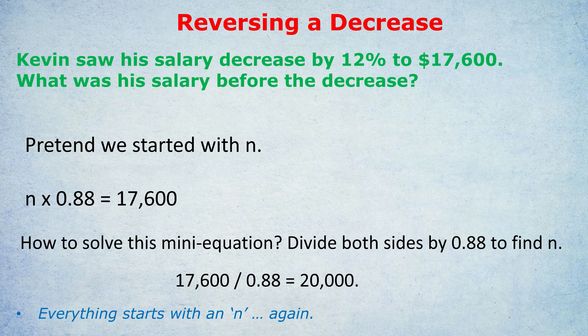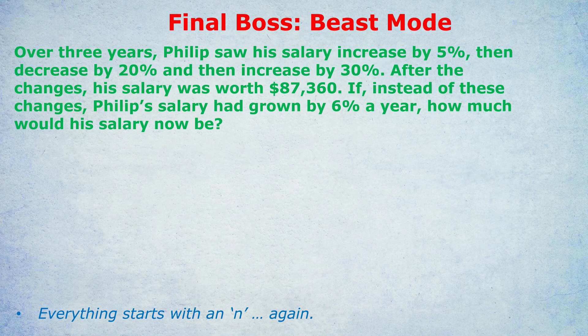Now have your best go at the final, very difficult question. Over three years, Philip saw his salary increase by 5%, then decrease by 20%, and then increase by 30%. After the changes, his salary was $87,360. If instead of these changes his salary had grown by 6% a year, how much would his salary now be?